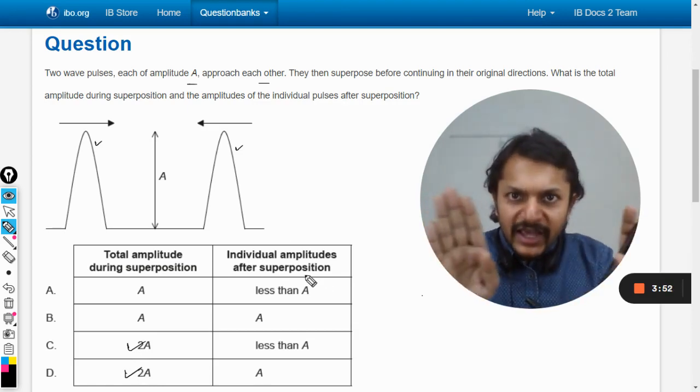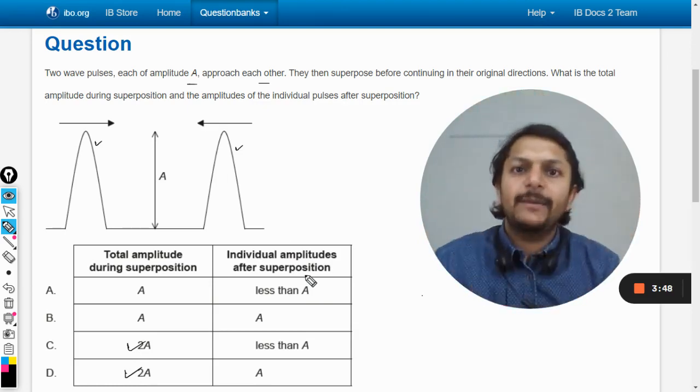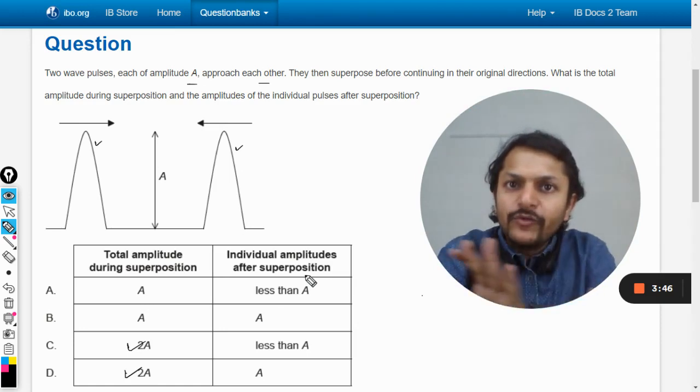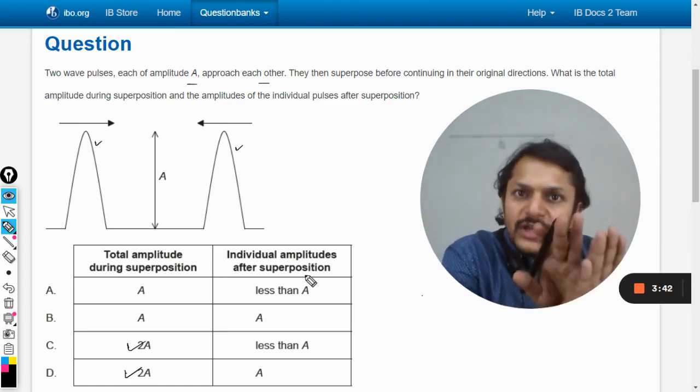And then what happens when they move apart? When they move away from each other, when they cross each other, what happens? As soon as they cross each other, they just keep on moving like this.